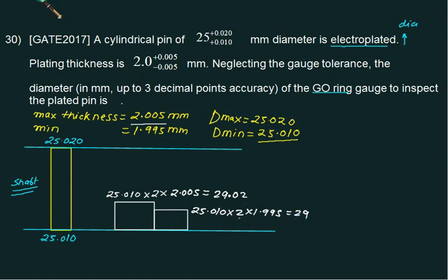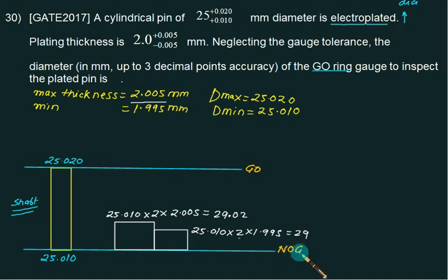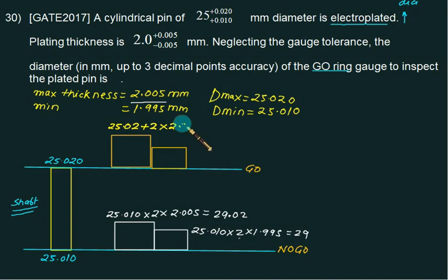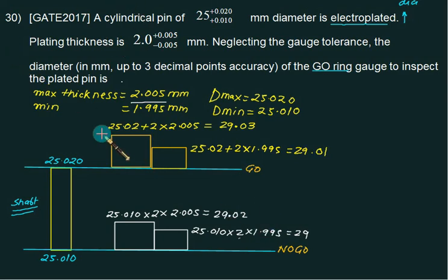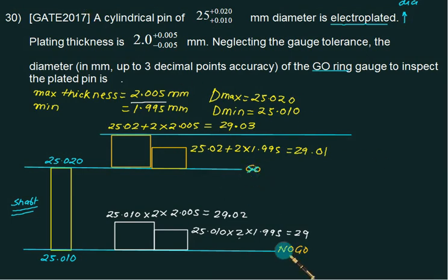For the GO and NO GO ring gauge calculation on the maximum pin: 25.02 + 2×2.005 = 29.03 mm, and 25.02 + 2×1.995 = 29.01 mm. Since we are designing the GO ring gauge for the shaft, selecting 29.03 automatically satisfies 29.01 as well. Therefore the GO ring gauge size is 29.02 mm. If we select 29.03, the condition is satisfied, but more than that thickness will not be allowed.